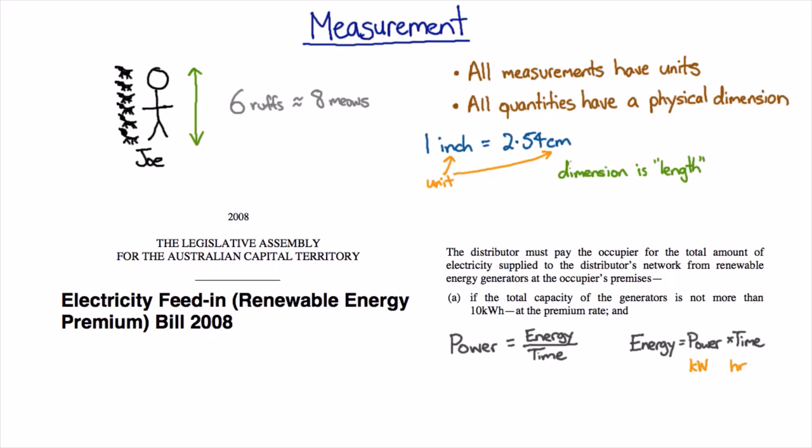it turns out that the kilowatt hour is the unit of energy that electricity companies use to bill us. And so for example, you might spend 20 cents per kilowatt hour for your electricity.